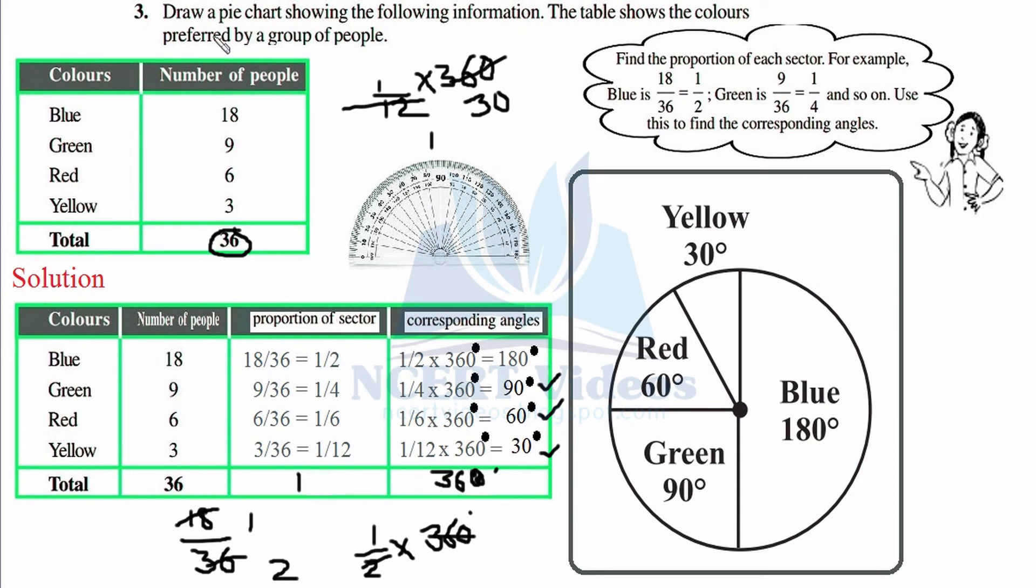Now we need to draw the pie chart. Take whatever radius you want, just large enough to show information correctly. Construct it with the help of compasses. Always tackle the easiest angles first - for 180 degrees we just divide the circle into two equal halves. That's 180 degrees for blue, and we wrote it here.